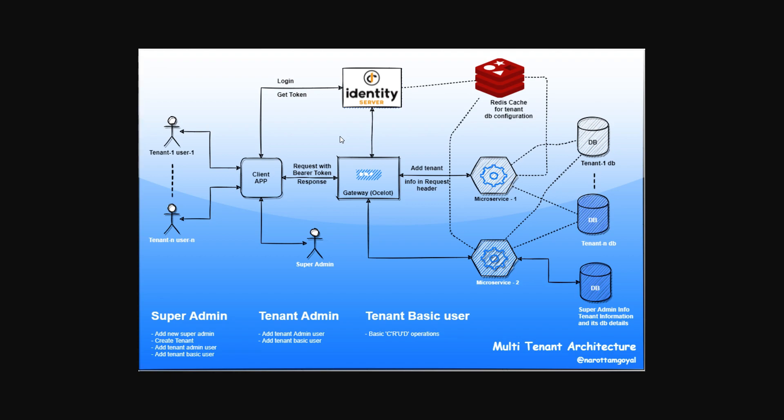There are many ways to implement multi-tenant architecture. For a small project, one approach is to carry an extra column called tenant information in a shared DB, so one DB holds information for all tenants. But for bigger projects, depending on the client, they may say their data should be separate and not mixed with others — for example, an XYZ company wanting their data in a separate DB.